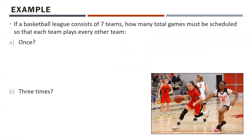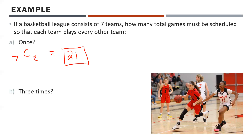A basketball league has seven teams. How many total games must be scheduled so that each team plays every other team once? This is a combination — Duchess versus Rosemary is the same game as Rosemary versus Duchess, so order doesn't matter. With seven teams choosing two, it's 7C2, which gives us 21 different games.